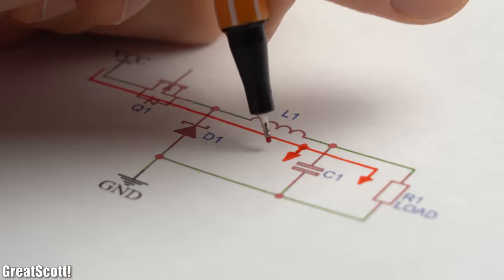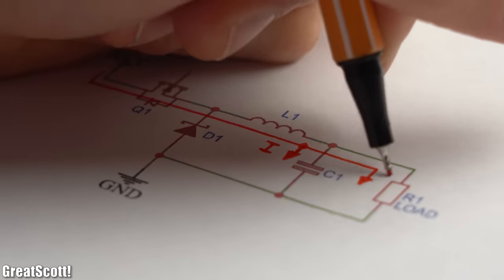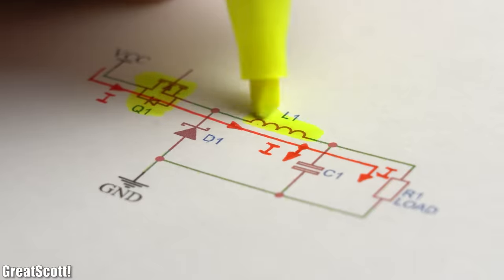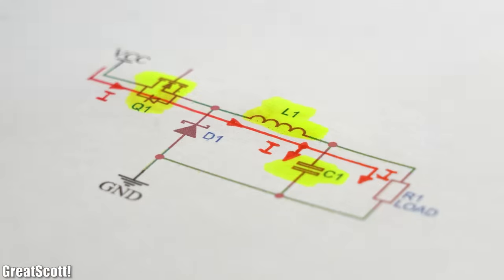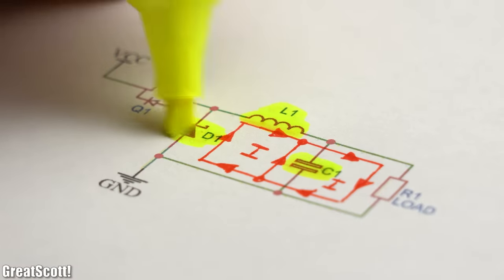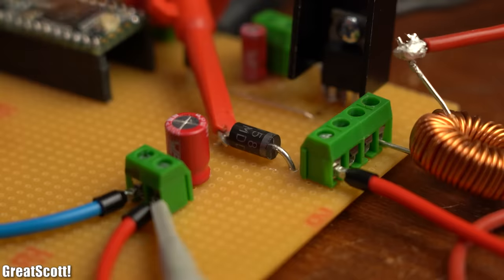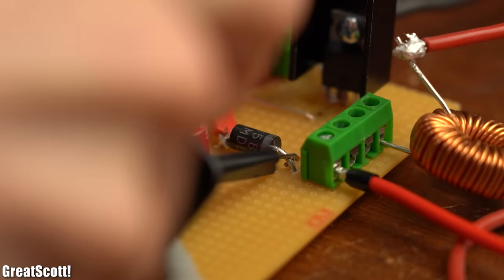During the first switching state we only got the MOSFET, inductor, and capacitor, which all have very low losses, so there is not much to improve. During the second switching state, however, current flows through the diode whose voltage drop we can measure in the practical circuit.